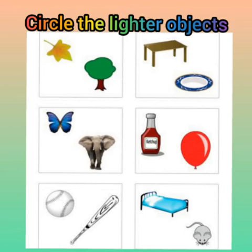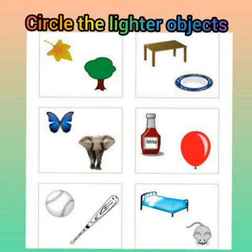For the saucer and plate comparison, you will see which is heavy. The table will be heavy, so you will circle on the plate accordingly. For butterfly and elephant: the elephant is heavy and the butterfly is light, so you will circle on the butterfly. For bottle and balloon: the bottle is heavy and the balloon is light, so you will circle on the balloon.